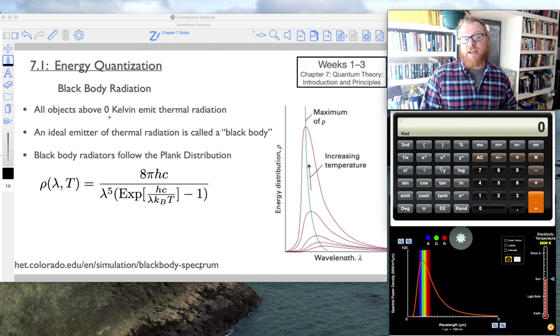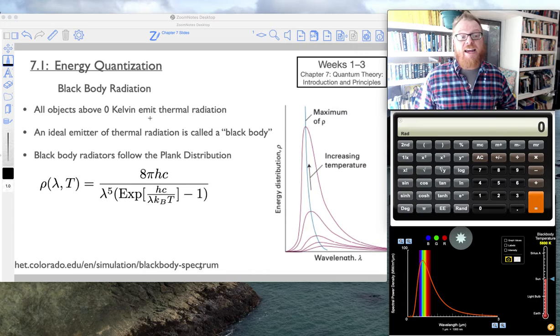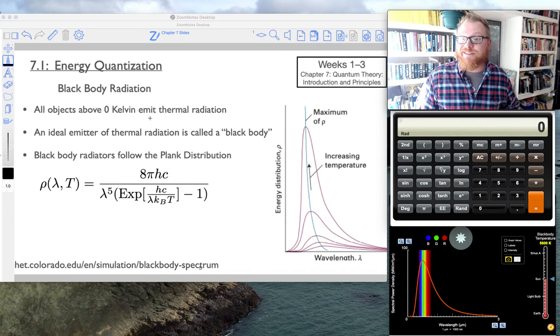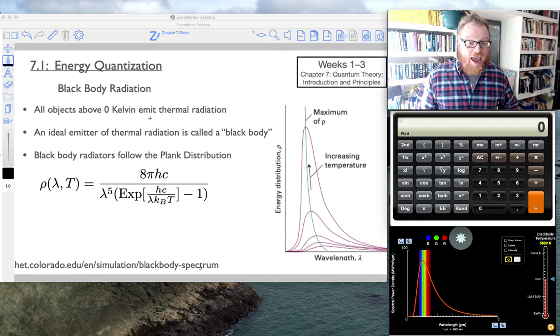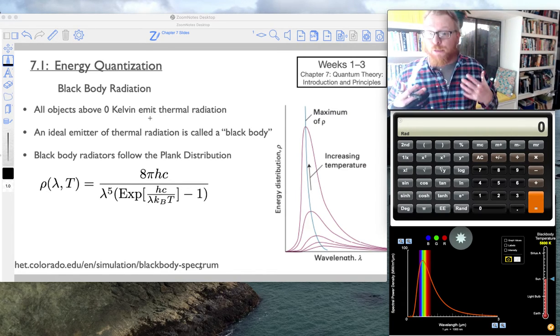All objects above zero Kelvin emit thermal radiation. They have to. So I am an object. I'm not zero Kelvin. I'm about 310 Kelvin, and because I'm about 310 Kelvin, I emit thermal radiation.